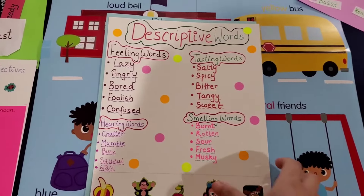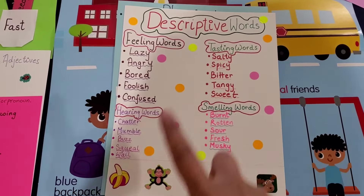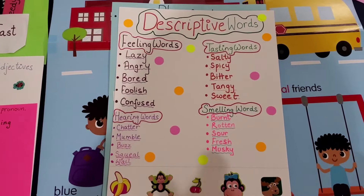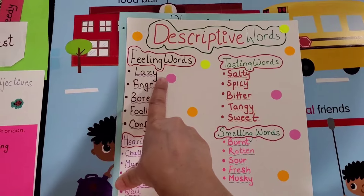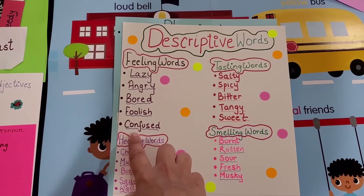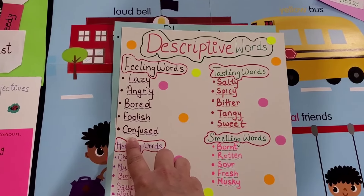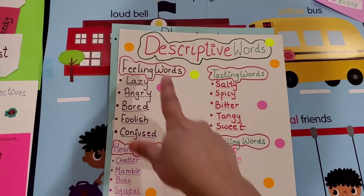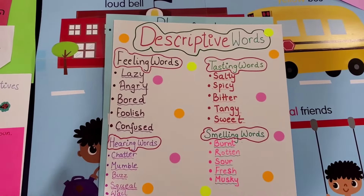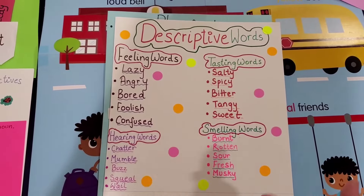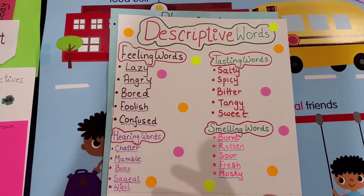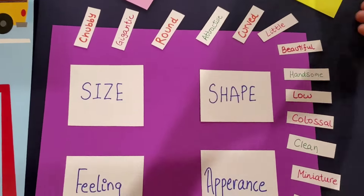Once they've read these words again and again, tell them to use them in short sentences right there: 'I am feeling lazy today,' 'Who got angry the other day?' 'I am bored,' 'This looks so foolish,' 'I'm confused.' You're just helping them make short sentences on these words so they know these are feeling words, how to express them, and how the other person knows what they're feeling — because these are all descriptive words.